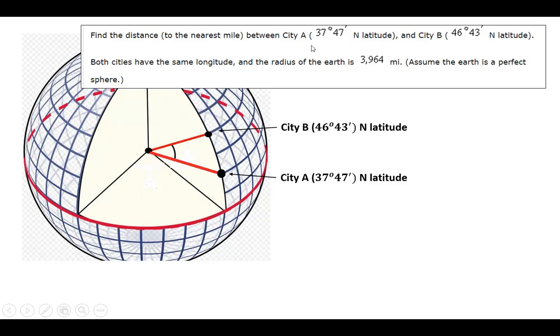and City B, located at 46 degrees 43 minutes north latitude. Both cities have the same longitude, and the radius of the Earth is 3964 miles. We assume the Earth is a perfect sphere.